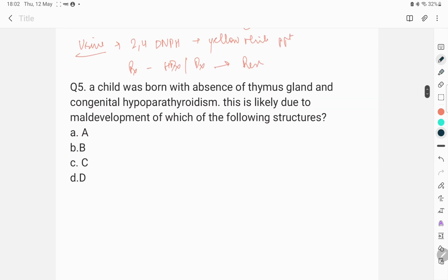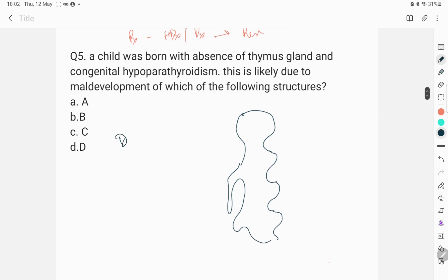Another question was, a child was born with absent thymus gland and congenital hypoparathyroidism. This is likely due to maldevelopment of which structure? Diagram was given showing pharyngeal arches, clefts and pouches. Somewhat like this structure. This is the first pouch, second pouch, third pouch, fourth pouch. Here, there would be first cleft, second, third and fourth cleft.